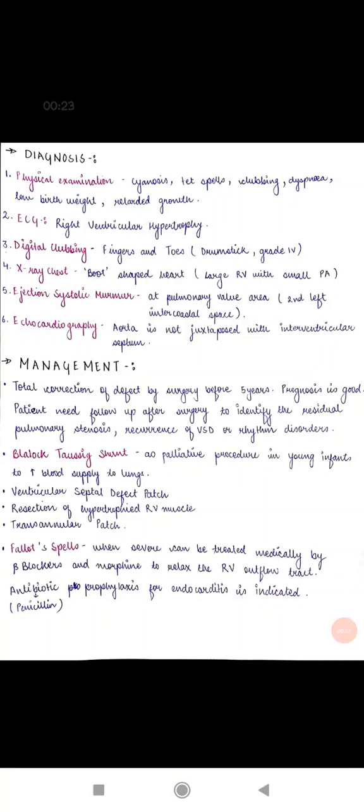Okay, so the first diagnosis which we can make for TOF baby or TOF child is through physical examination or clinical history. That is, what are the symptoms that would be present in the baby? The first symptom is cyanosis. Cyanosis is a hypoxic condition which leads to bluish discoloration of the skin which we can see.